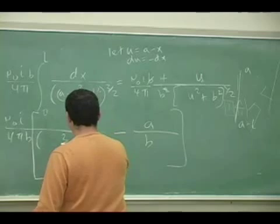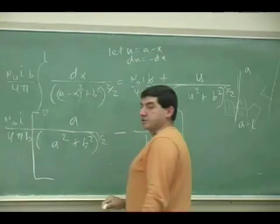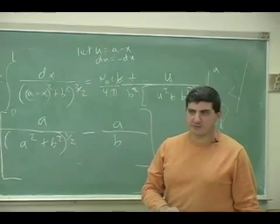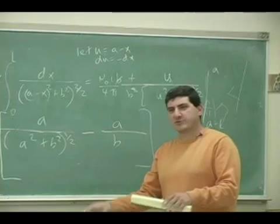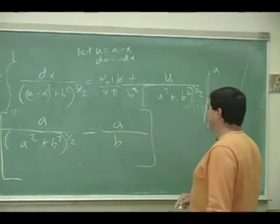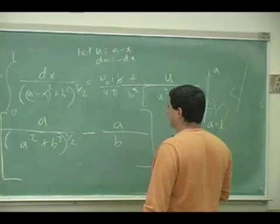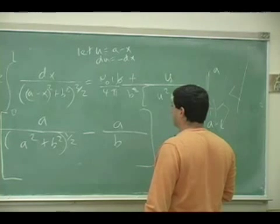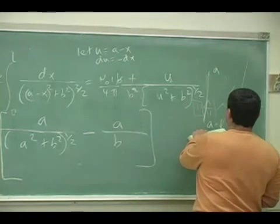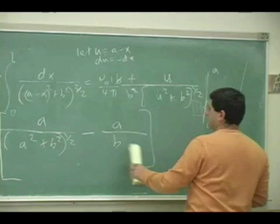So you have here A over L. A squared plus B squared — this should really be a simple thing, but because I was careless continually. You have A squared, A over (A squared plus B squared) minus, and then this one you put in minus.